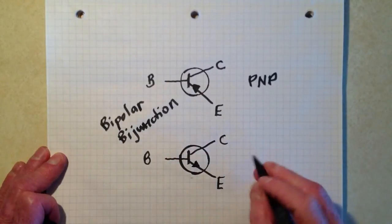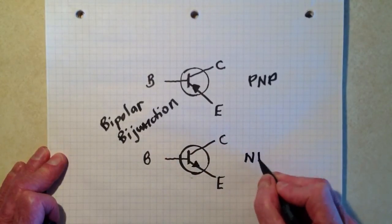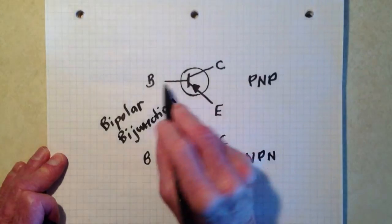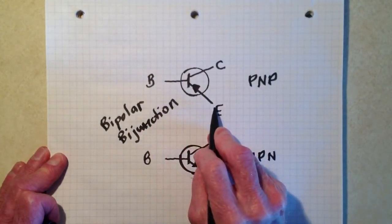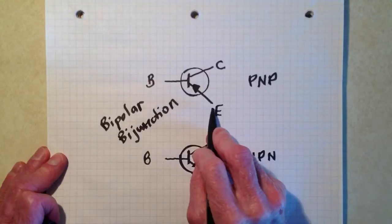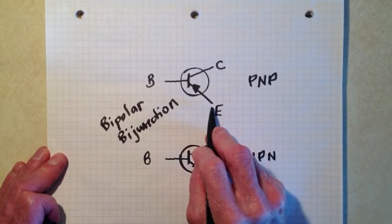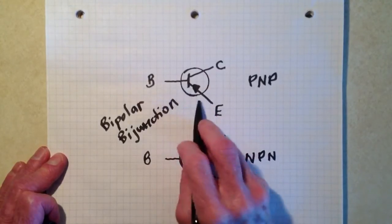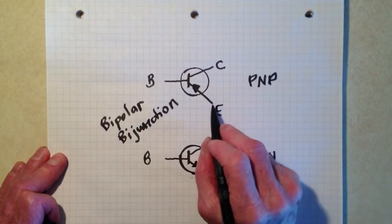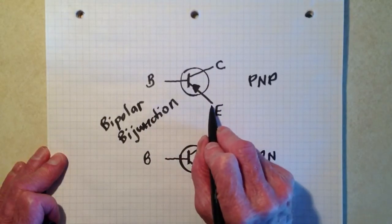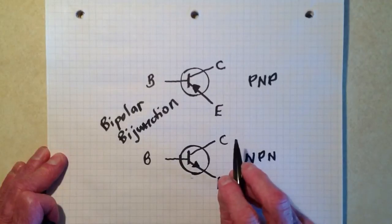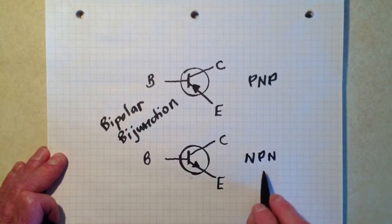That is the NPN variety. The arrow points out. Remember, electrons can easily flow against the arrow in any semiconductor device, but only with great difficulty with the arrow. Conventional current, on the other hand, which flows from plus to minus, flows in the direction of the arrow. That can be a point of confusion for some people.